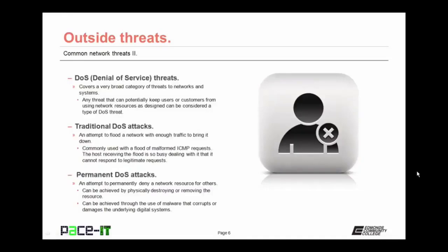The first major threat we're going to talk about is the denial of service threat, or the DOS threat. This covers a very broad category of threats to networks and systems — DOS covers any threat that can potentially keep users or customers from using network resources as designed. A traditional DOS attack attempts to flood a network with enough traffic to bring it down, commonly used with a flood of malformed ICMP requests. The host that receives the flood can be so busy dealing with the deluge of data that it cannot respond to legitimate requests.